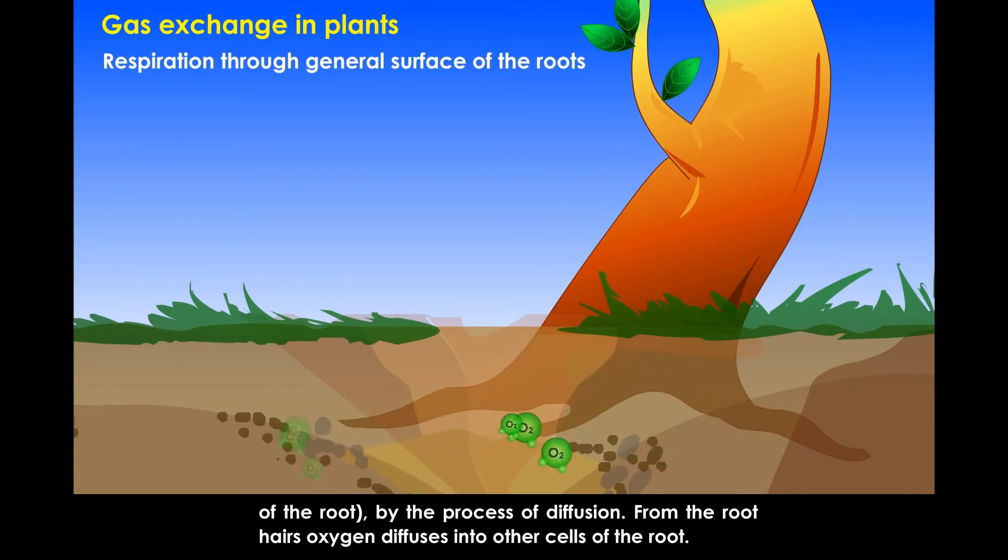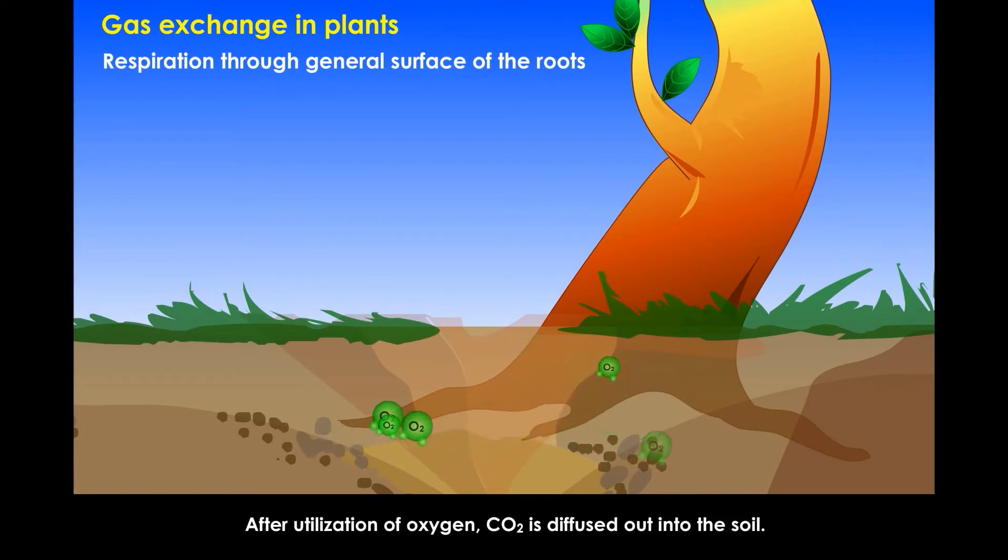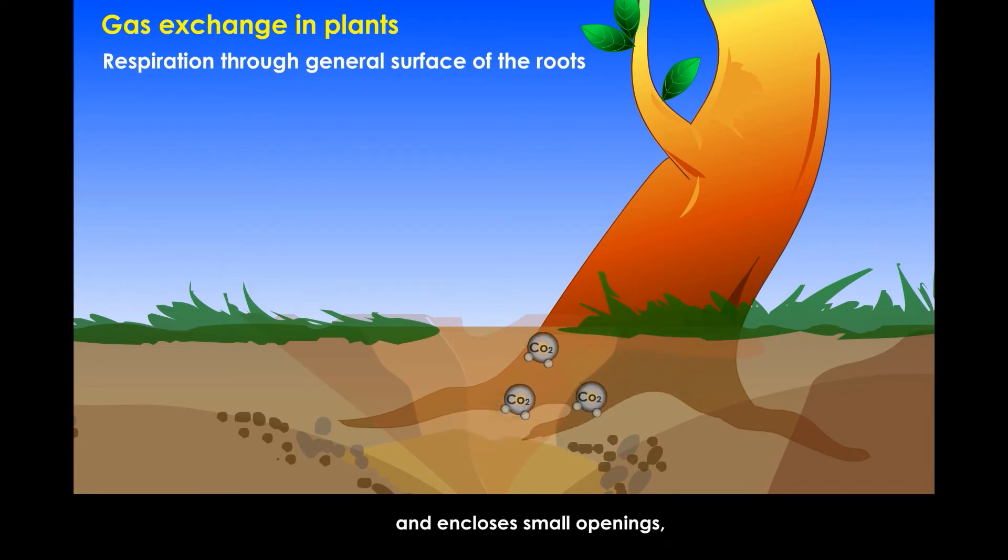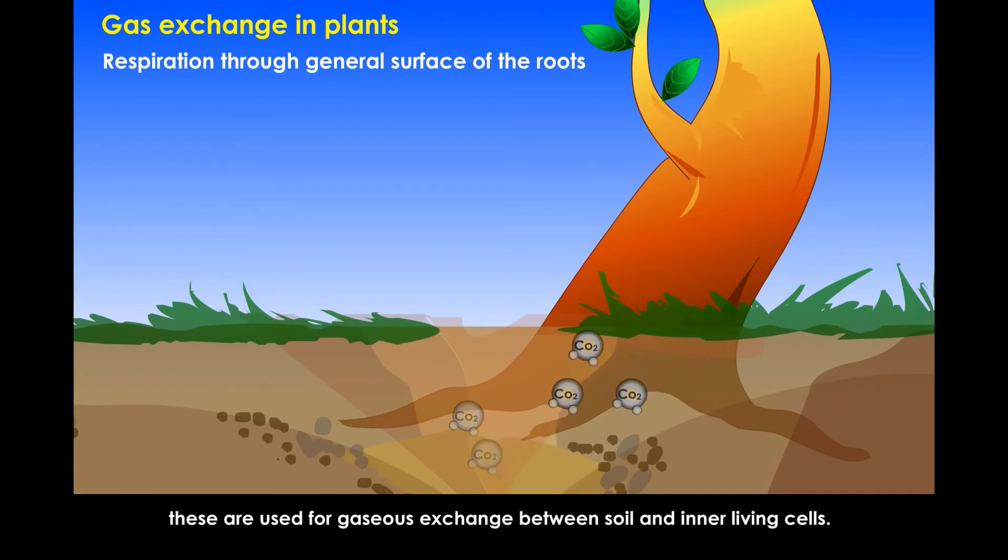From the root hairs, oxygen diffuses into other cells of the root. After utilization of oxygen, carbon dioxide is diffused out into the soil. In older roots, there are no root hairs present. Instead, they have a layer of dead cells which is protective in nature and encloses small openings. These are used for gaseous exchange between soil and inner living cells.